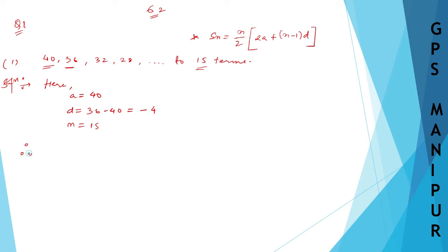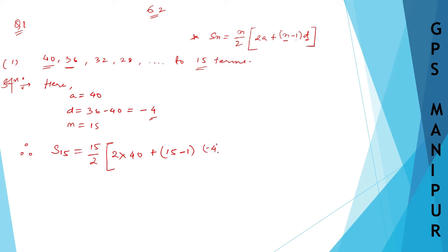Therefore, we need to find S15. Substituting into the formula: S15 = 15/2 × (2 × 40 + (15 - 1) × (-4)). So that gives us 15/2 × (80 + 14 × (-4)). Now 14 into minus 4 — plus into minus gives minus — so it is minus 56.